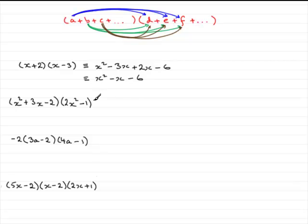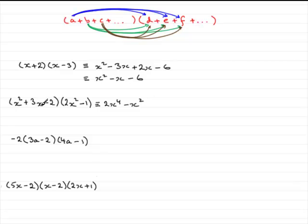Now in this example, extending this idea again, we've got three terms in the first bracket and two terms in the second bracket. So we take the first term here, x squared, multiply it with each of the two terms in this bracket. Then move on to plus 3x, times it with each of those two terms, and then minus 2 times each of those two terms. So, x squared times 2x squared is 2x to the power 4. Then x squared times minus 1 is minus x squared. Now we move on to the second term, plus 3x, multiplied with each of the two terms in this bracket. So plus 3x times 2x squared is plus 6x cubed.